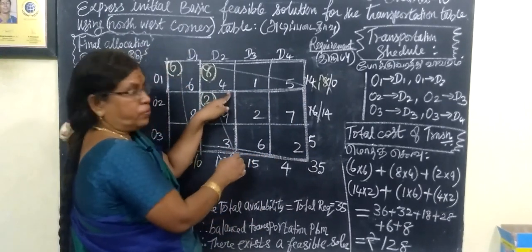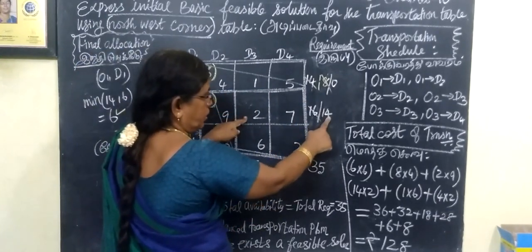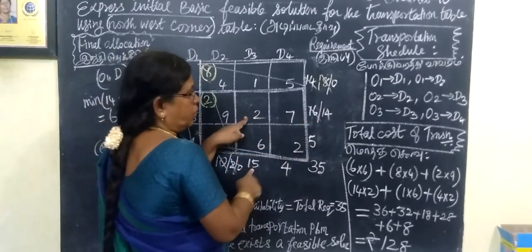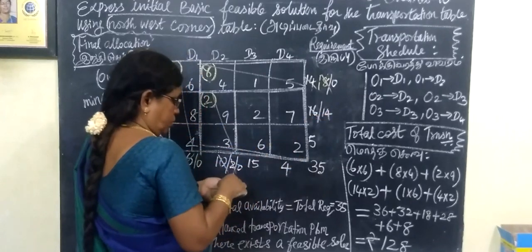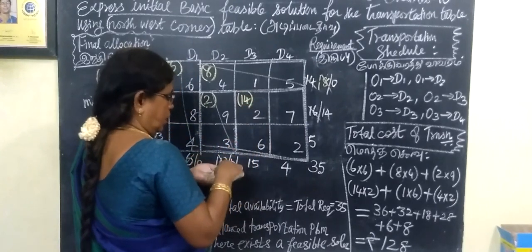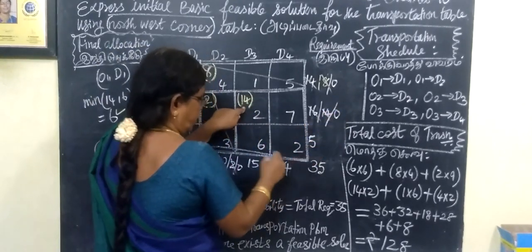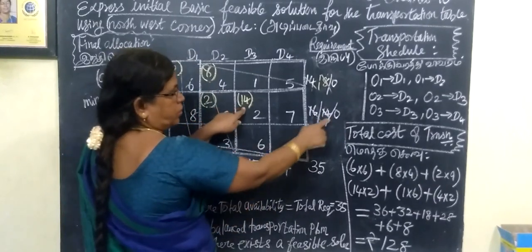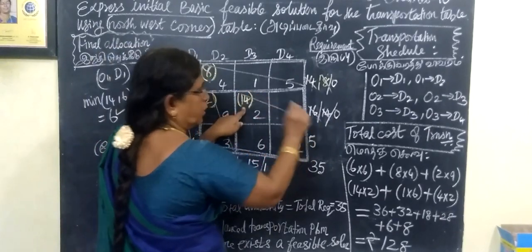Now again the Northwest corner — this is the Northwest corner. The corresponding row value is 14 and the column value is 15. The smaller value is 14. So immediately write 14 here. Subtract: 14 minus 14 equals 0, and 15 minus 14 equals 1. Since the row value is 0, the corresponding row is deleted.